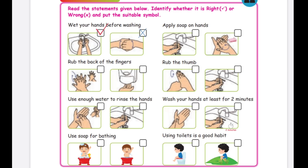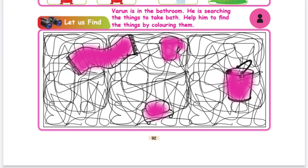Next, read the statement and put the correct symbol. First: wet your hands before washing. Second: apply soap on hands. Third: rub the back of the fingers. Fourth: rub the thumb. Fifth: use enough water to rinse the hands. Sixth: wash your hands for at least two minutes. Seventh: use soap for bathing. Last: using toilets is a good habit. Color the things that are used for bath.